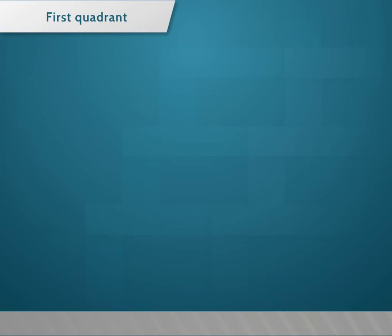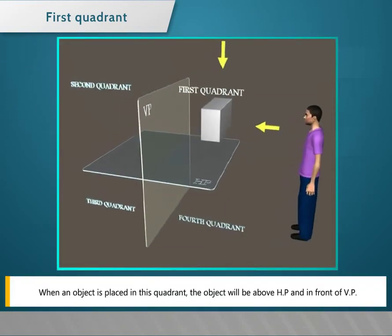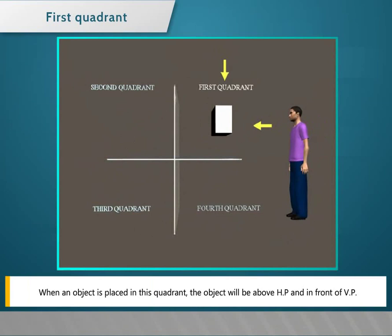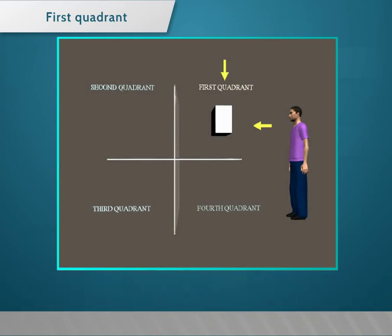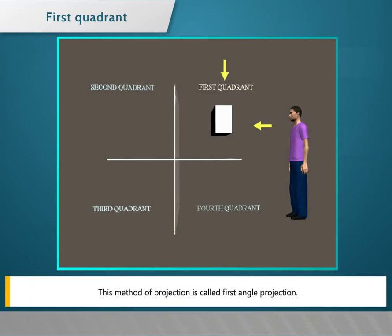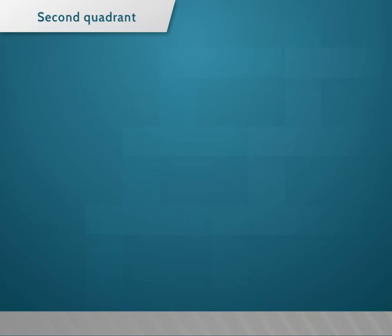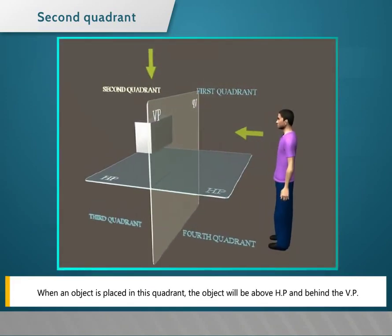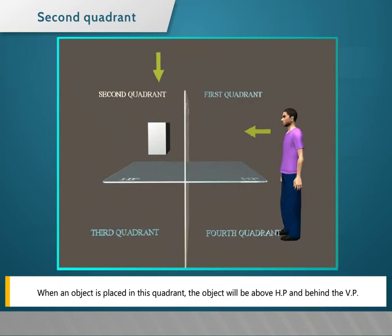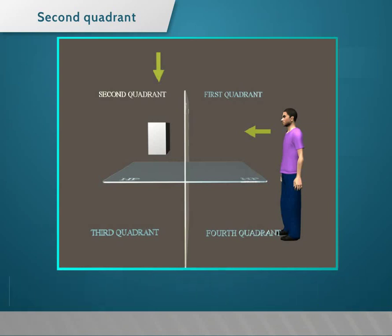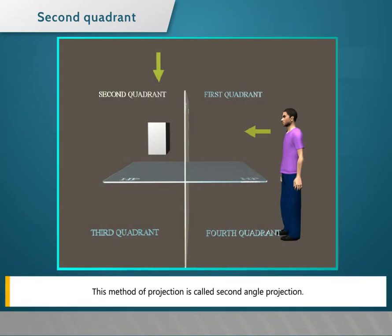First quadrant: when an object is placed in this quadrant, the object will be above HP and in front of VP. This method of projection is called first angle projection. Second quadrant: when an object is placed in this quadrant, the object will be above HP and behind the VP. This method of projection is called second angle projection.